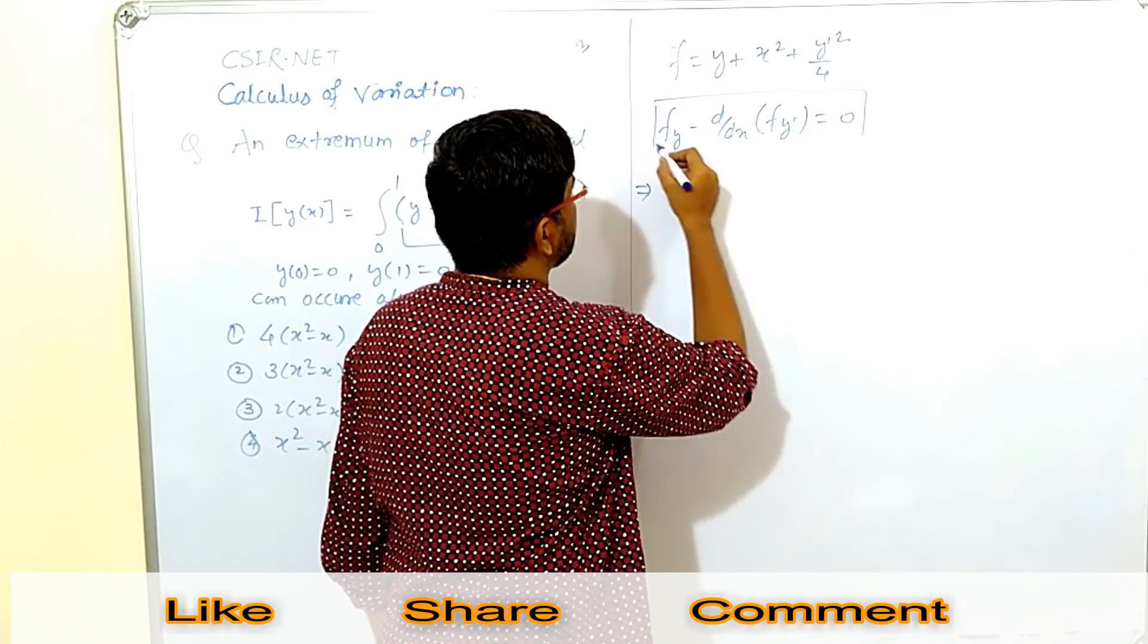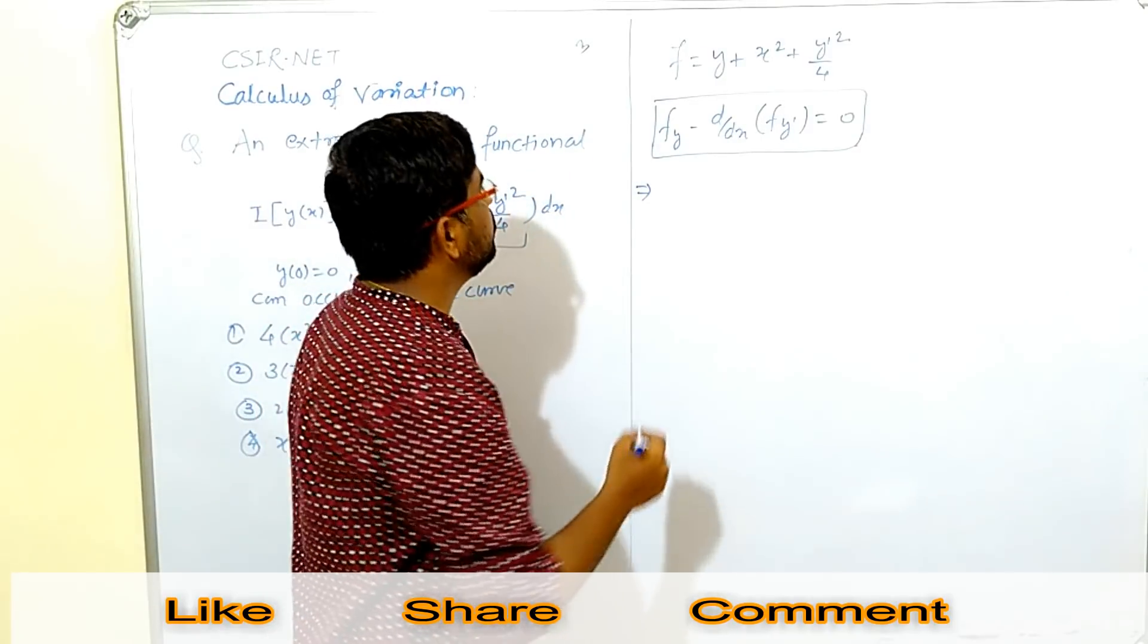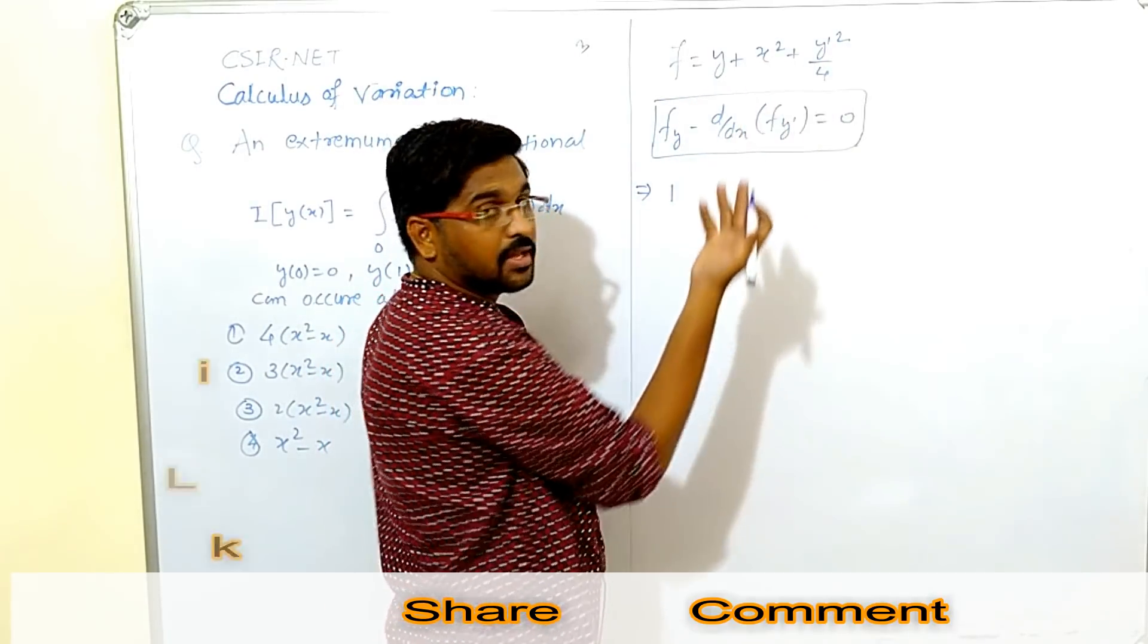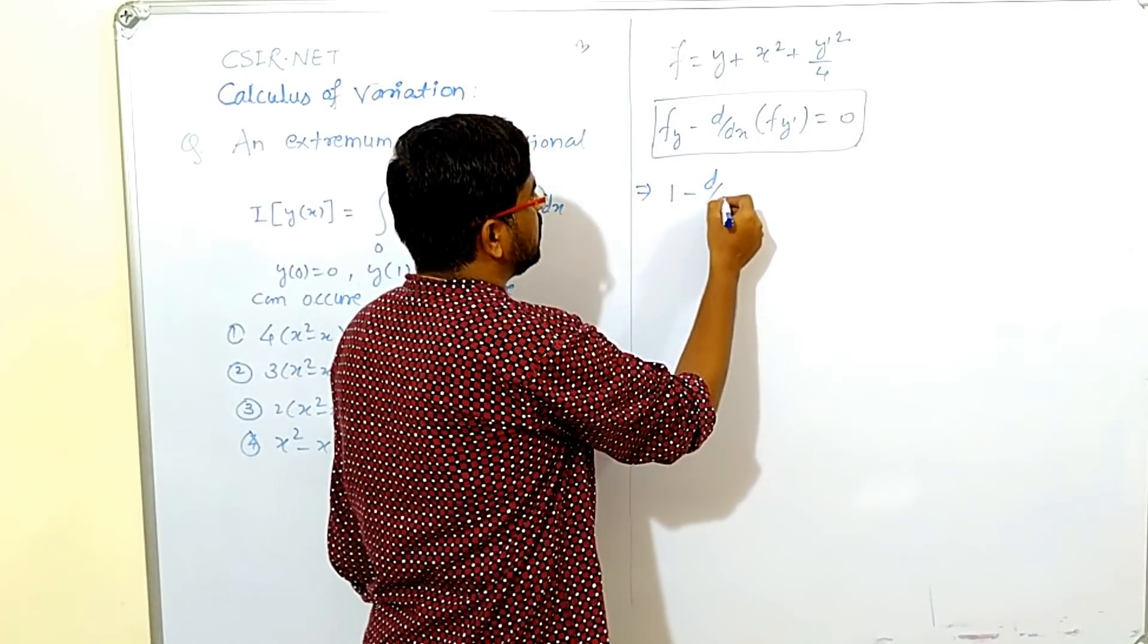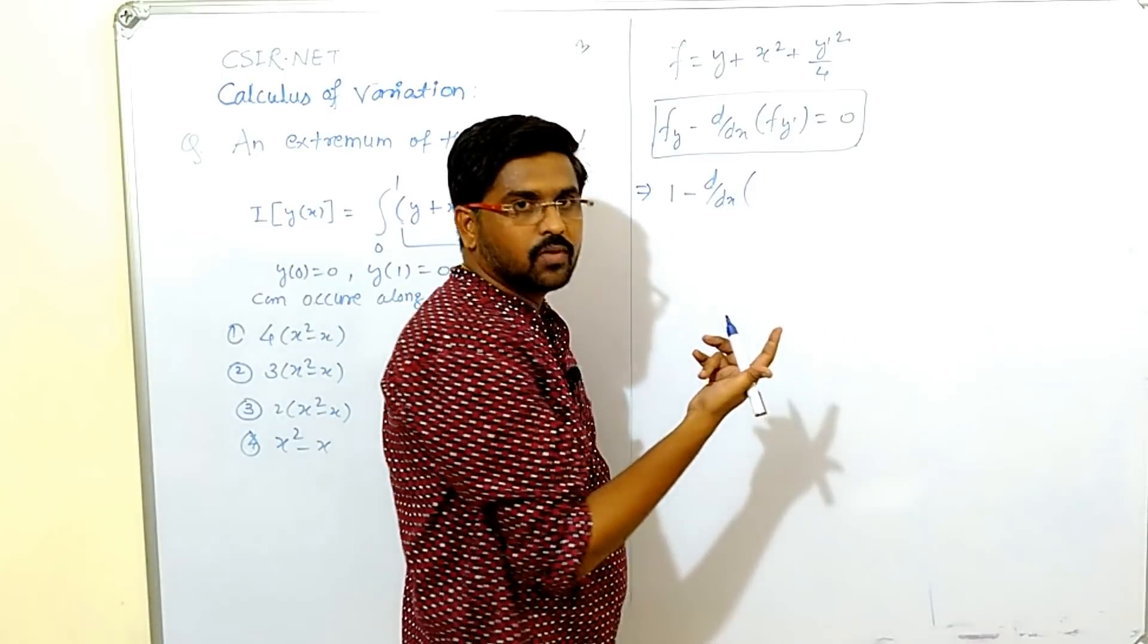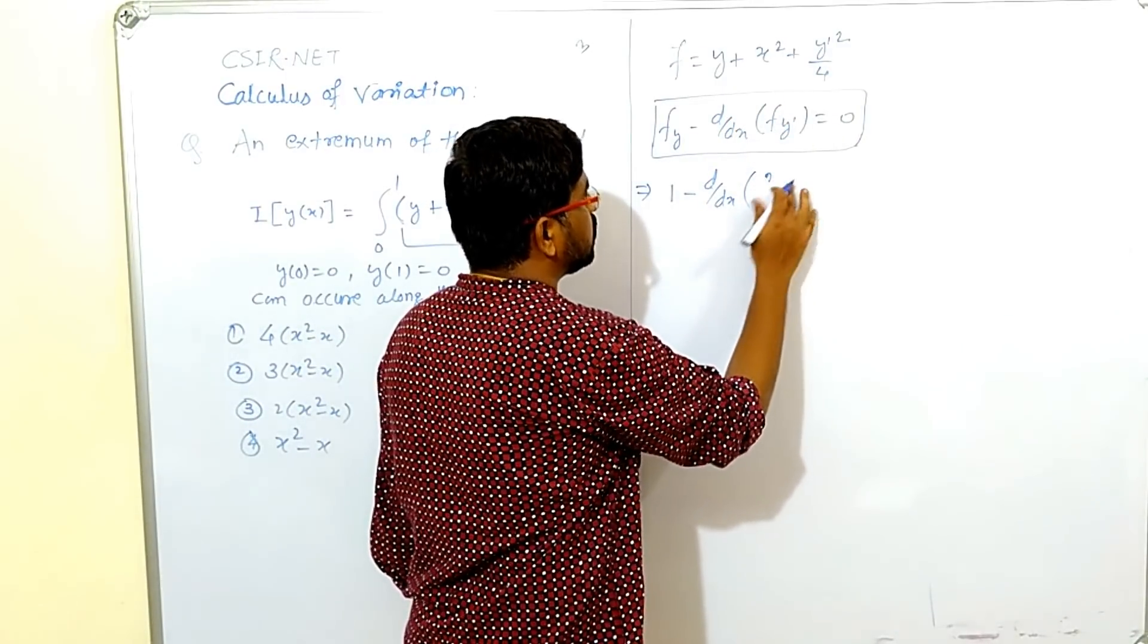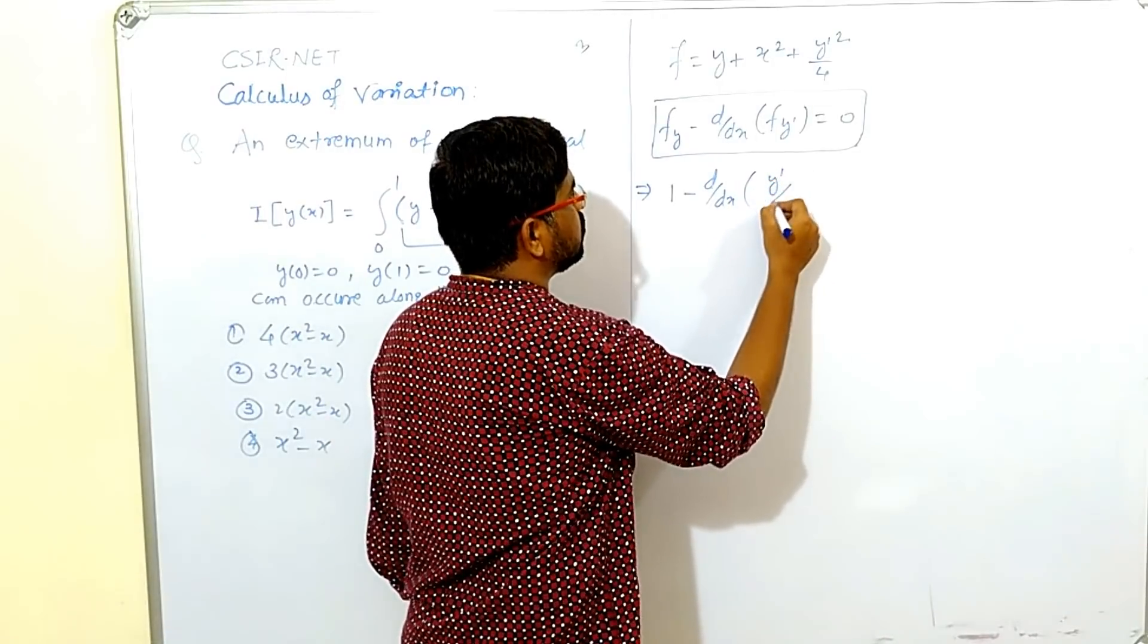This is a very useful equation that can solve many questions. The derivative is f_y with respect to y partially, its derivative is 1 and other considered as a constant, so no derivative. Minus d/dx of f_y dash with respect to y dash derivative partially, other considered as a constant so derivative is 0 and its derivative is 2 y dash by 4, so y dash by 2.